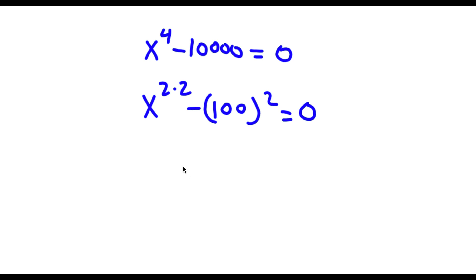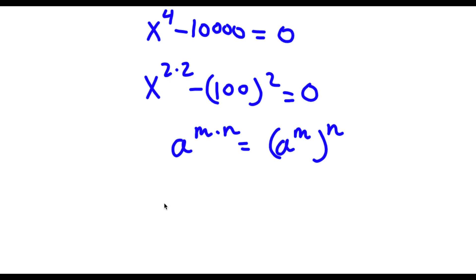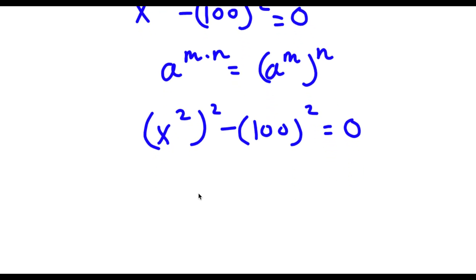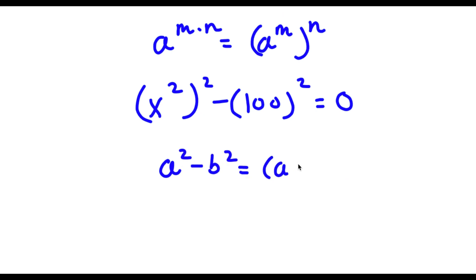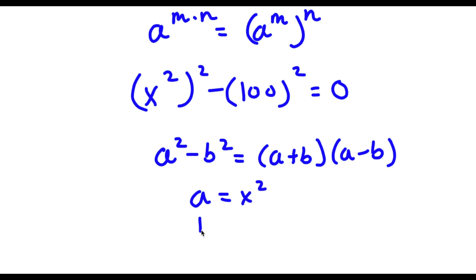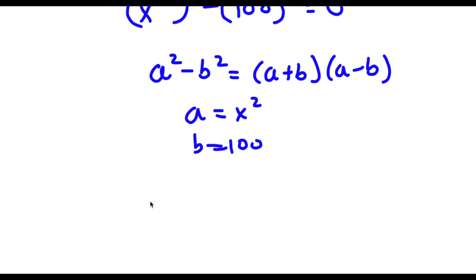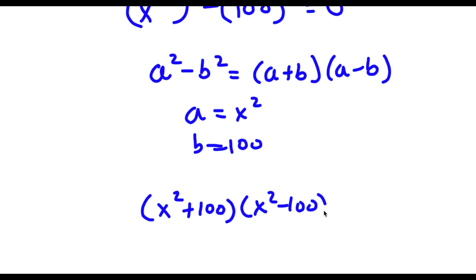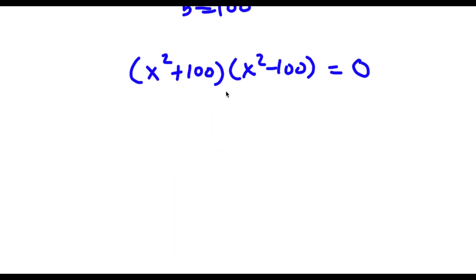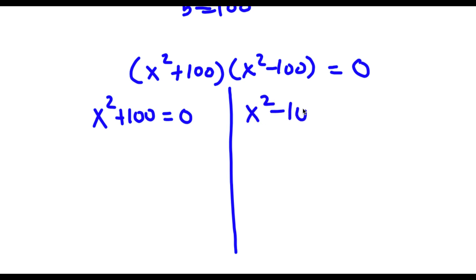Now using the difference of squares rule — a squared minus b squared equals (a plus b)(a minus b) — where a is x squared and b is 100, I can factor this as x squared plus 100, times x squared minus 100, equals 0. This gives me two equations: x squared plus 100 equals 0, and x squared minus 100 equals 0.